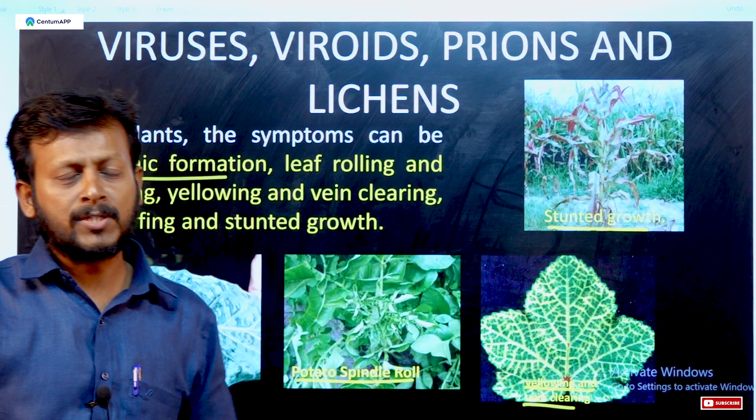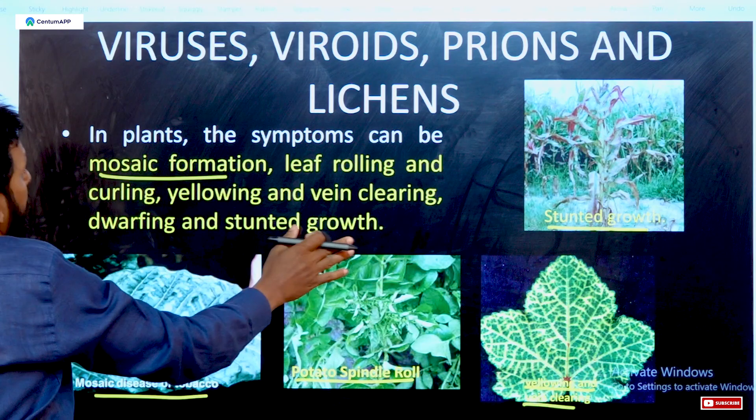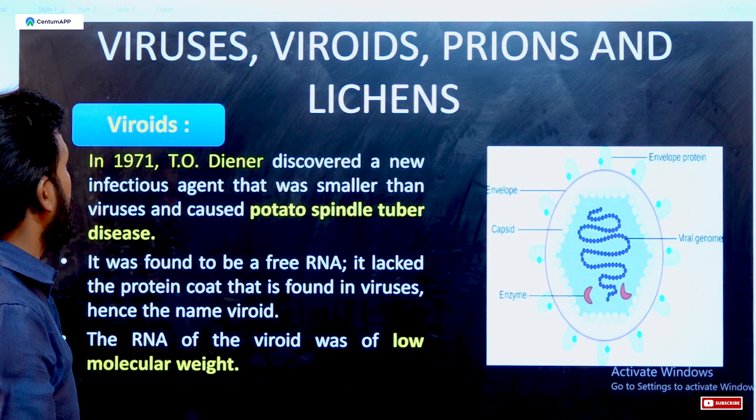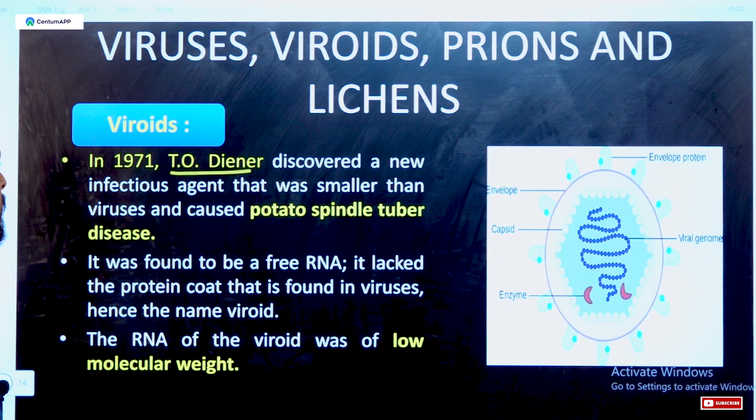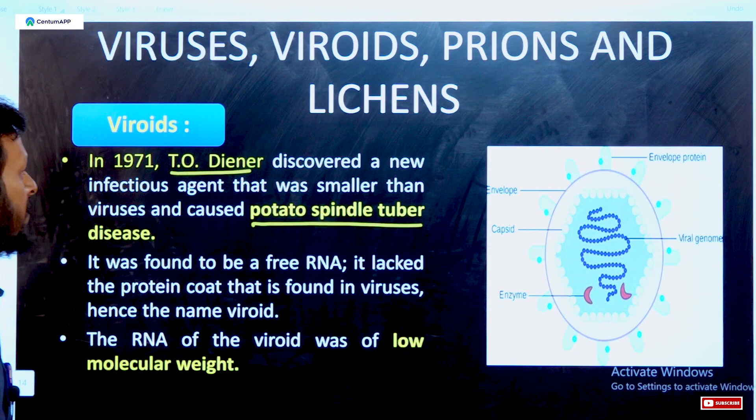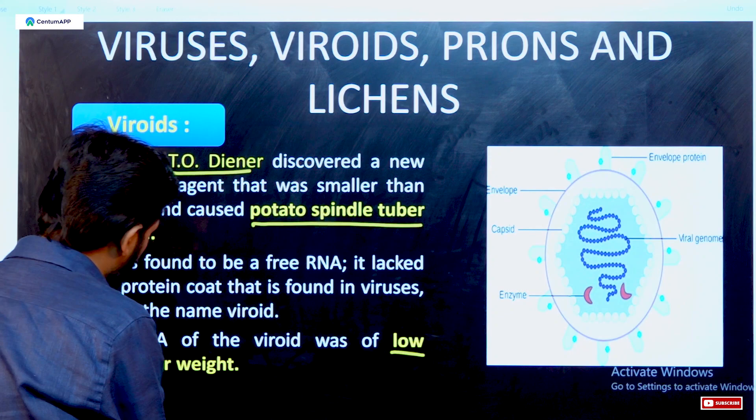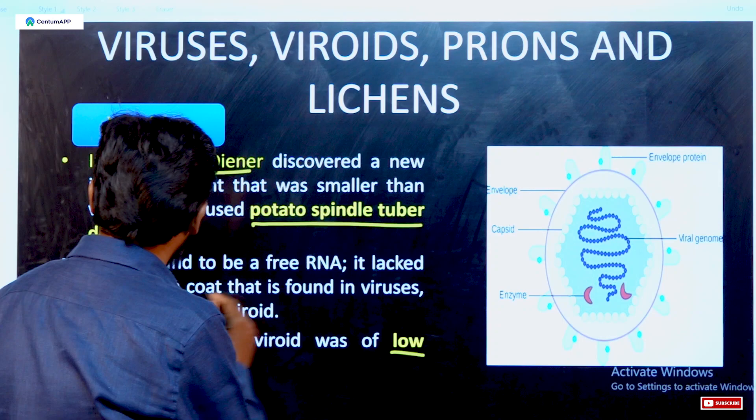Viroids were discovered by T. O. Diener. This viroid mostly affects potato spindle tuber disease. Viroids have very low molecular weight compared to viruses, lack a protein coat, and only contain RNA. The RNA is circular in shape.